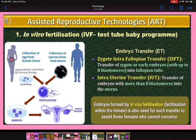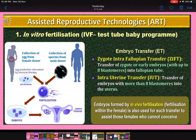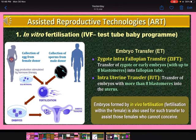Zygote intra-fallopian transfer involves the transfer of a zygote or early embryo with up to 8 blastomeres into the fallopian tube. If the zygote has more than 8 blastomeres, the transfer is done in the uterus — this is called intra-uterine transfer or IUT. Embryos formed by in vivo fertilization — fertilization within the female — are also used for such transfers to assist females who cannot conceive.